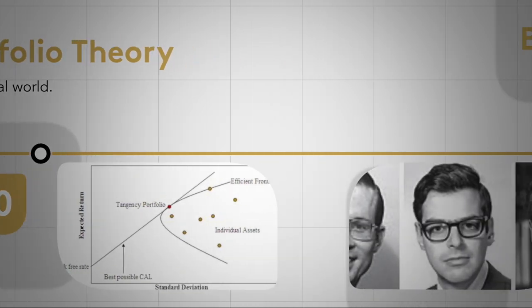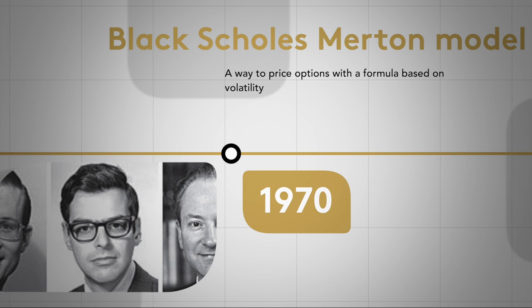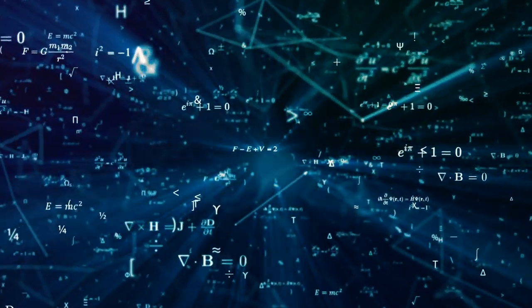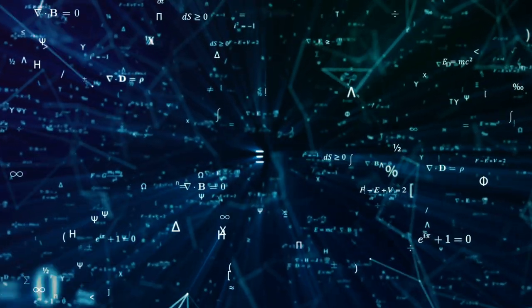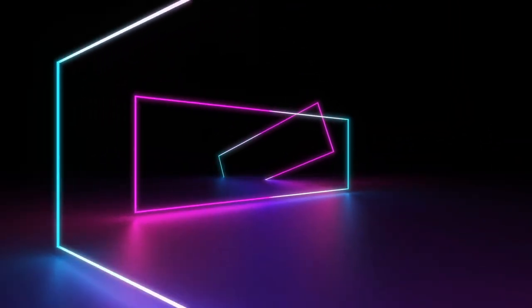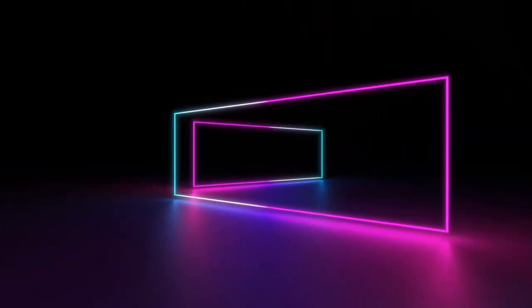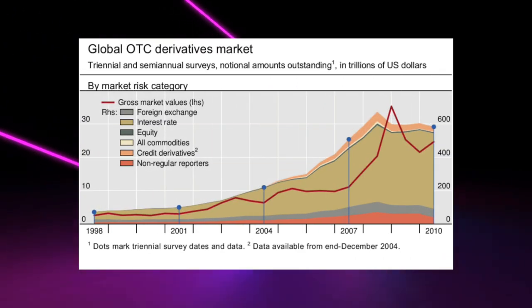Then in the 70s, theory became applicable in practice with the Black-Scholes-Merton model, which we often call the Black and Scholes model. In 1973, three academics introduced a way to price options with a formula based on volatility, derived from Brownian motion, which is used for particle physics. But it's no longer the realized volatility — instead, it is implied volatility: volatility that's looking into the future. The model is a perfect blend of theory and practice, still widely used today, and it triggered the boom in option trading and derivatives.